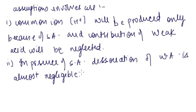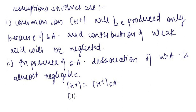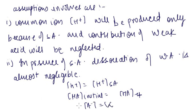Because dissociation of the weak acid is negligible, all H⁺ at equilibrium comes from the strong acid. For the weak acid: [HA] at equilibrium ≈ initial [HA], and [A⁻] = Cα. H⁺ at equilibrium equals the initial H⁺ contributed by the strong acid.